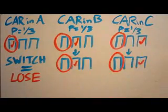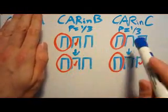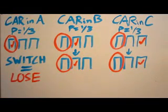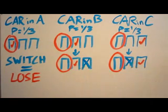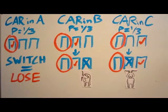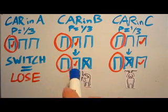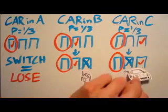In the other two-thirds of the cases, when one of the doors you didn't pick has the car, Monty is constrained by your choice of door. He can't show you the door with the car, so he has to reveal the goat behind the other door. This means that in both of these cases, the remaining closed door will contain the car.